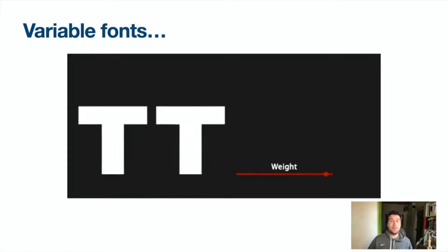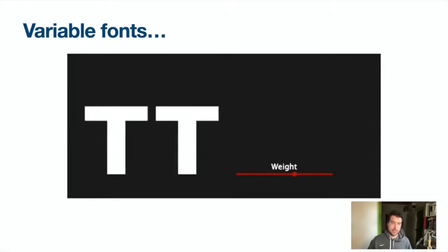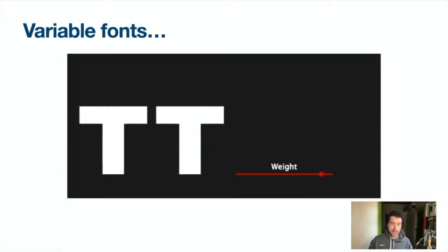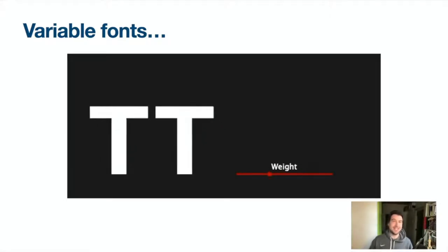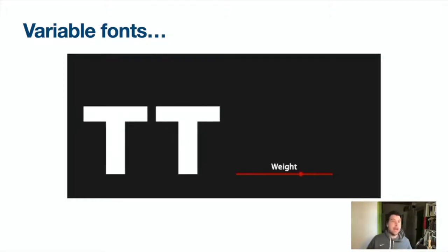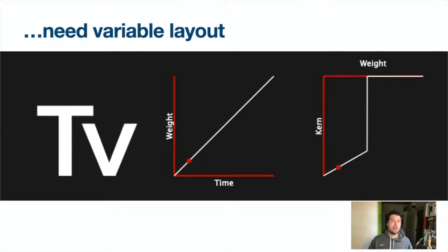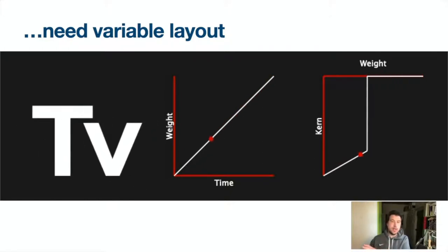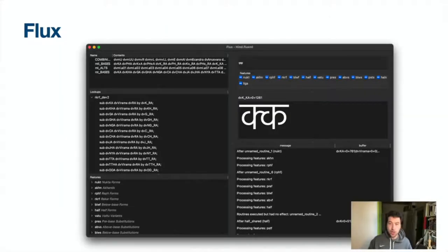Since about 2016 we've had something called Variable Fonts, where one font can define how it changes in different axes. Here you can see a font getting bolder and less bold by sliding up and down the weight axis — so one font is doing the job of regular, medium and bold. When you have a variable font like that, you also need variable layout: positioning rules, for example, which can change as the font changes along its design space. This is what I've been trying to write with Flux.